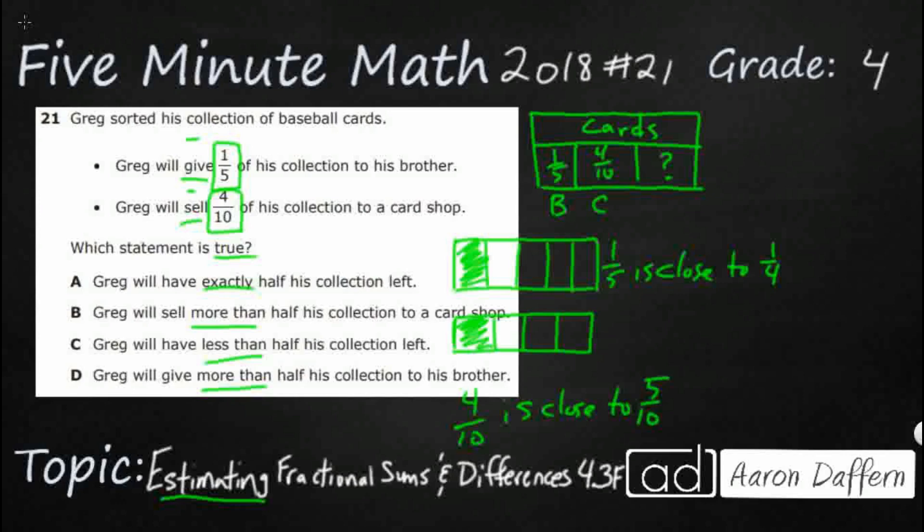I do not need to draw a picture for that because we can just keep it as the same denominator. We can say four-tenths is close to five-tenths. Now why would I want to get to five-tenths? Well, five-tenths is actually going to be helpful.